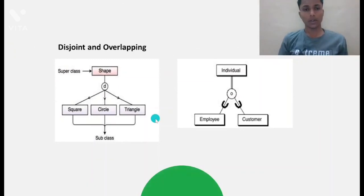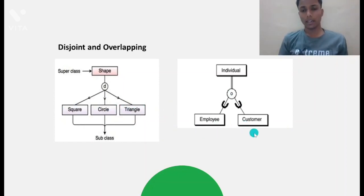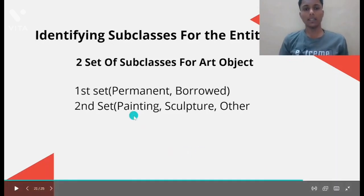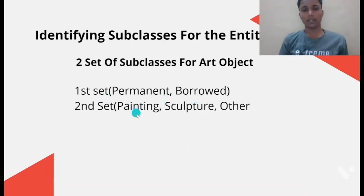Next comes disjoint and overlapping. D denotes disjoint, O denotes overlapping. Disjoint means the subclasses — square, circle, triangle — are not related to each other in any way. But in overlapping, for example, an employee can be a customer and a customer can be an employee. Now, identifying subclasses for our art museum: there are two sets of subclasses for art object. The first set has permanent and borrowed types, and the second set has painting, sculpture and other types.